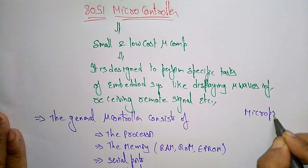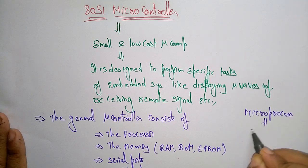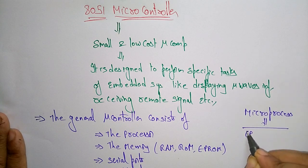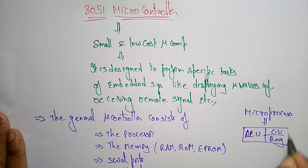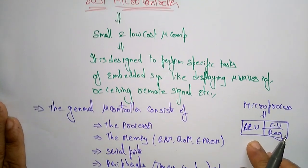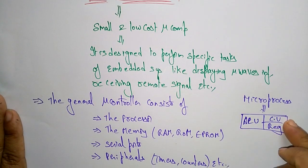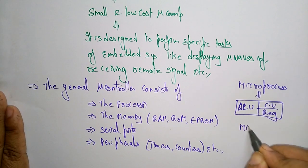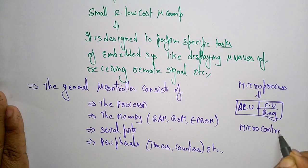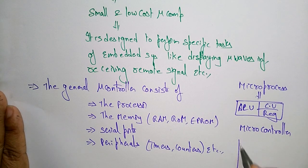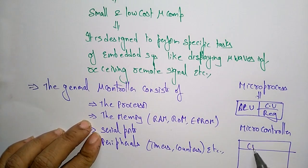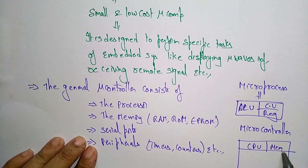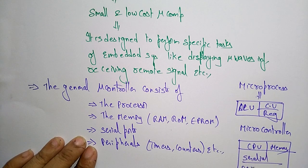Whereas a microprocessor is integrated with only the CPU — that is the arithmetic logic unit, the control unit, and registers. So the microprocessor is integrated with only the ALU, the control unit, and the registers. Whereas a microcontroller is integrated with all components like the CPU, memory such as RAM and ROM, some serial ports, and some peripherals.